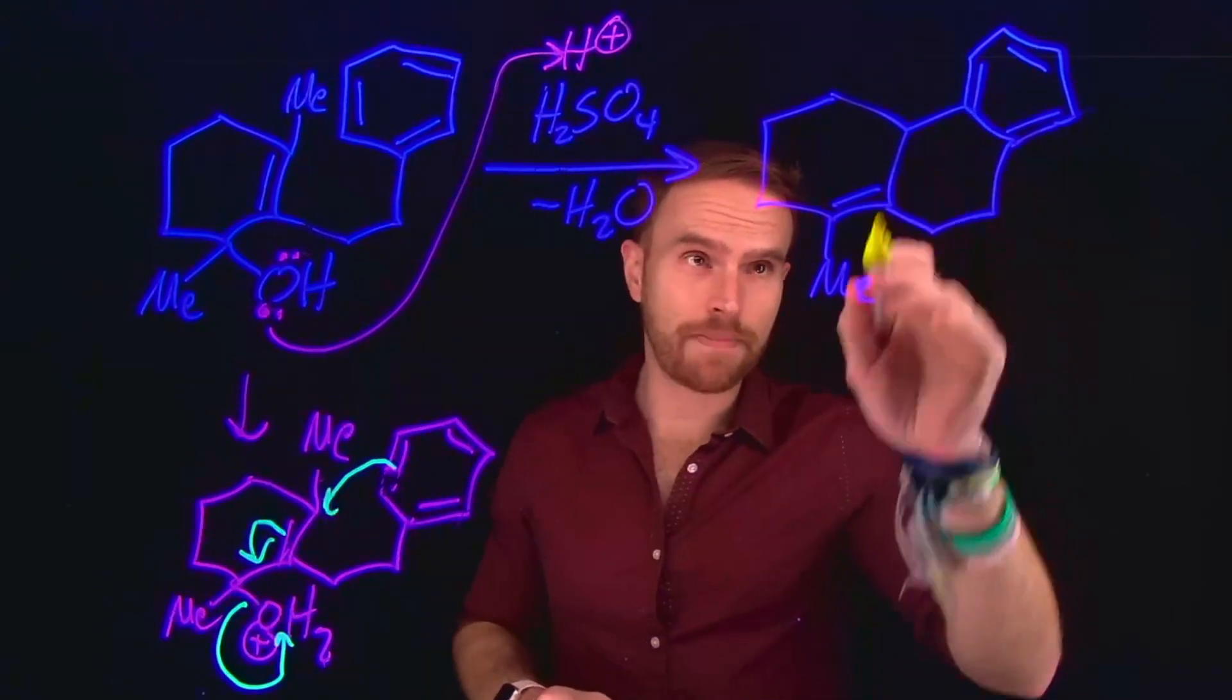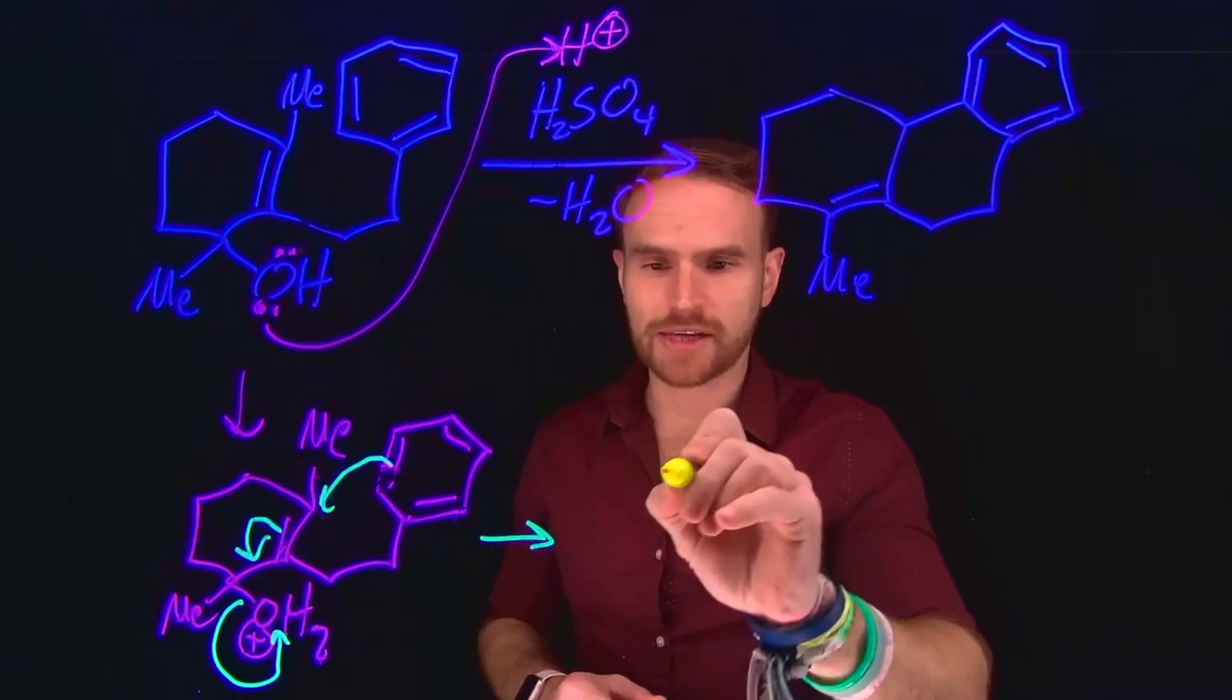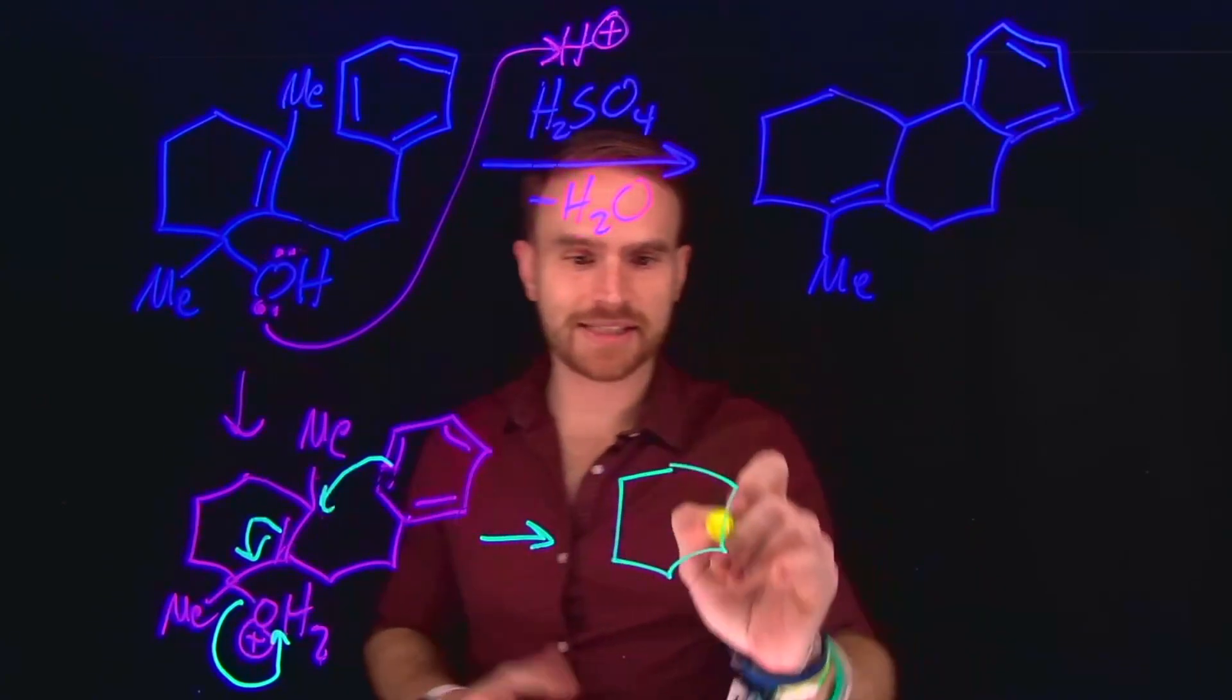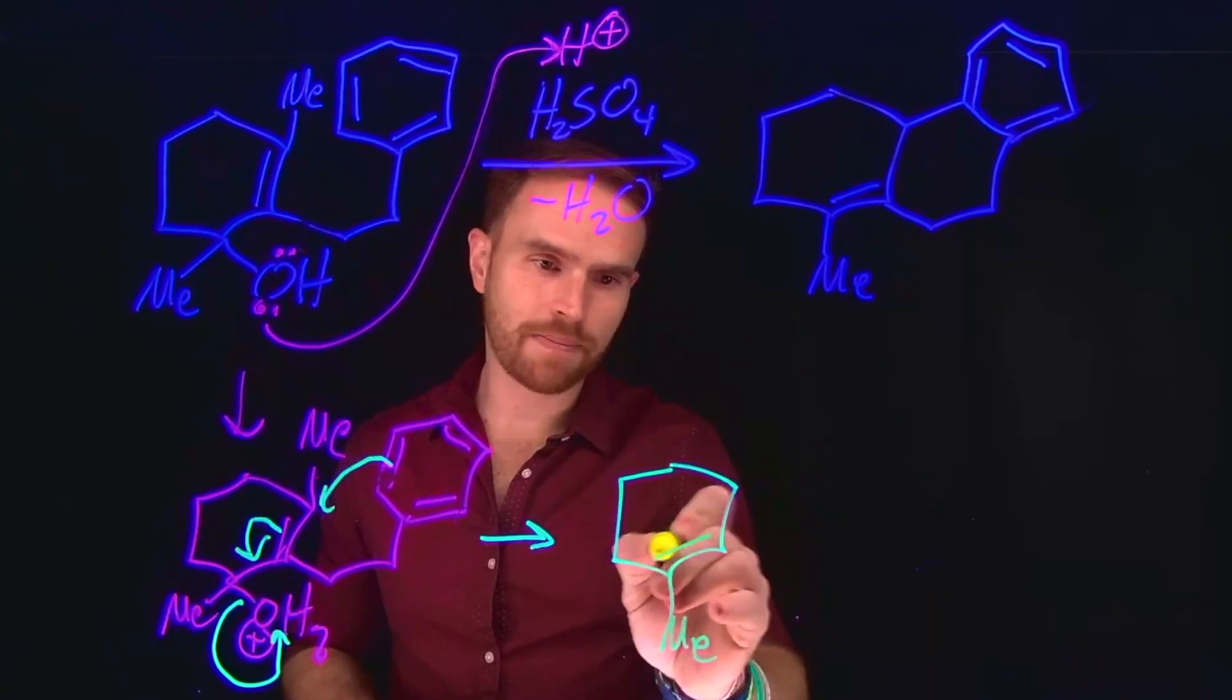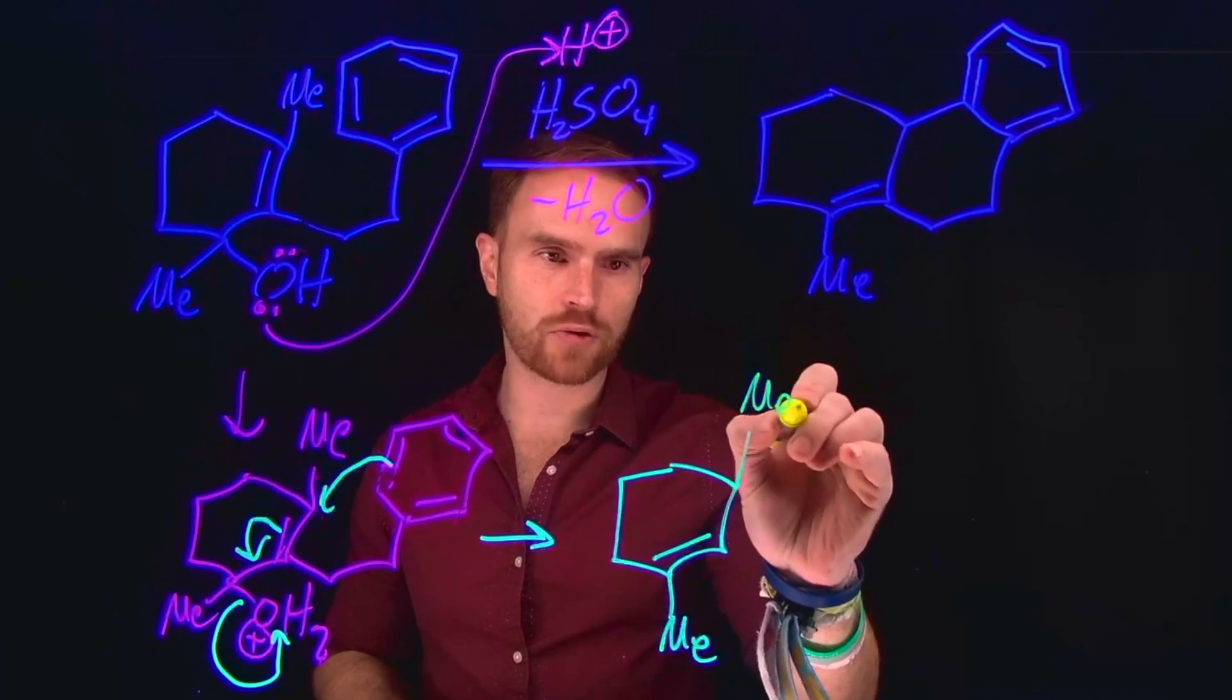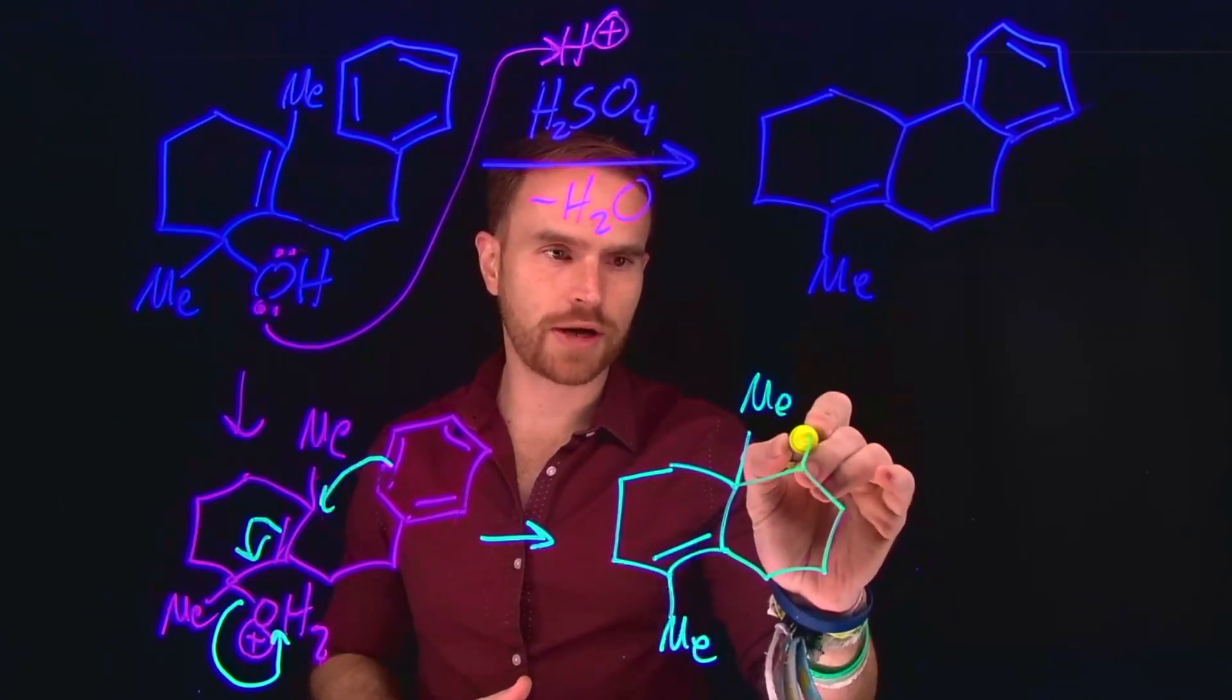And this is actually how we make this fused ring tricyclic system. So then the resulting product of that transformation is going to be that cyclic fused ring system, where water left as a good leaving group. Our new pi bond is located between these two carbons. Our methyl group is still positioned at this location, and now we have those three different rings.